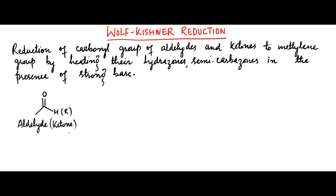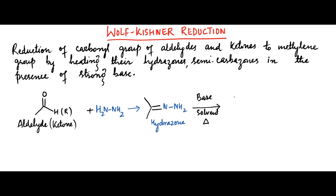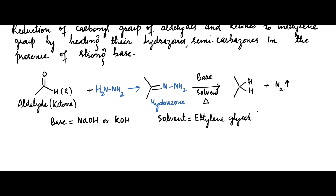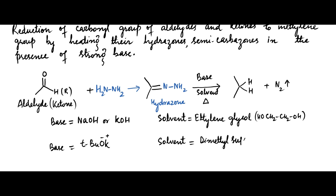Aldehydes or ketones on treatment with hydrazine form hydrazone. This hydrazone, when heated with a strong base, reduces the carbonyl group into a methylene group. When sodium hydroxide or potassium hydroxide is used as base, the solvent used is ethylene glycol. Whereas if potassium tertiary butoxide is used as base, the solvent used is dimethyl sulfoxide (DMSO).